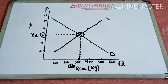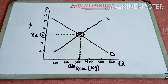Disequilibrium is a situation where internal or external forces prevent market equilibrium from being reached, or cause the market to fall out of equilibrium. These forces could be many, which we will discuss later. This disequilibrium could be a short-term consequence of a change in any of the factors or variables discussed earlier, or it could also be a long-term structural imbalance.